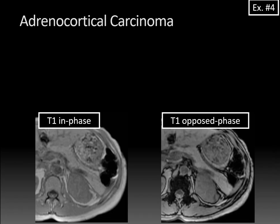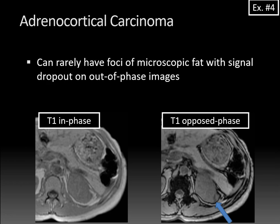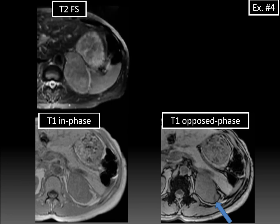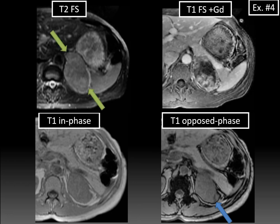Here's yet another left-sided adrenocortical carcinoma. On the opposed-phase image, there's a small area of signal dropout indicating the presence of microscopic or intracytoplasmic fat — and signal dropout throughout the adjacent vertebral body, which is normal and physiologic. Be aware that ACC can rarely have foci of microscopic fat with signal dropout on out-of-phase images, but don't confuse this small area of dropout with an adrenal adenoma. The remaining images show a heterogeneous, solid T2 appearance and heterogeneously enhancing, vascular post-contrast appearance — not consistent with adrenal adenoma. Even though ACC tends to present at large size, it starts small and could conceivably be confused with adrenal adenoma if caught at an early stage.